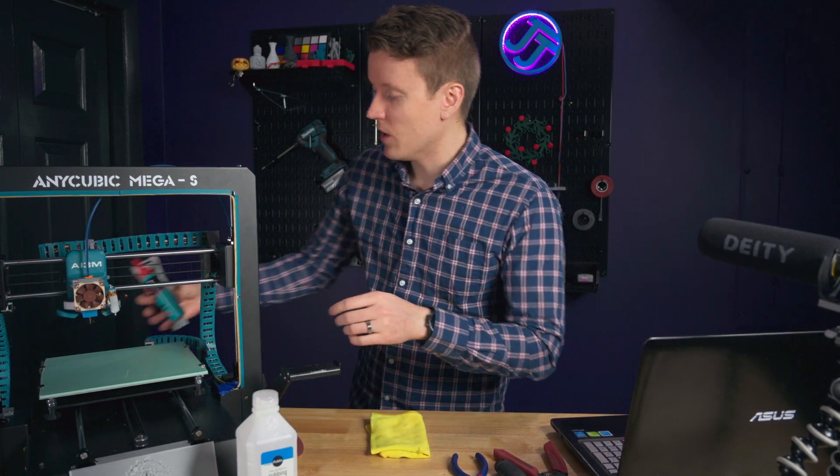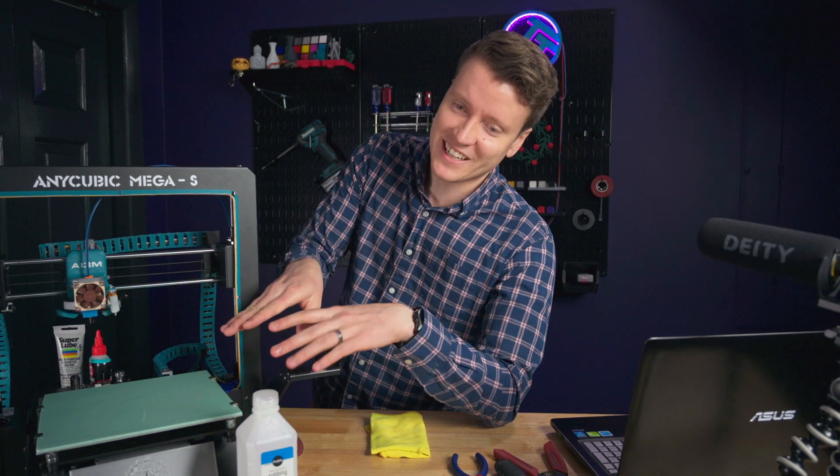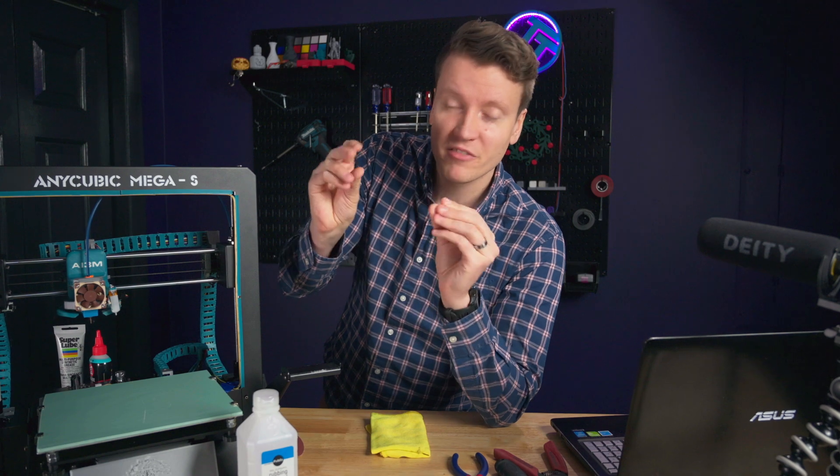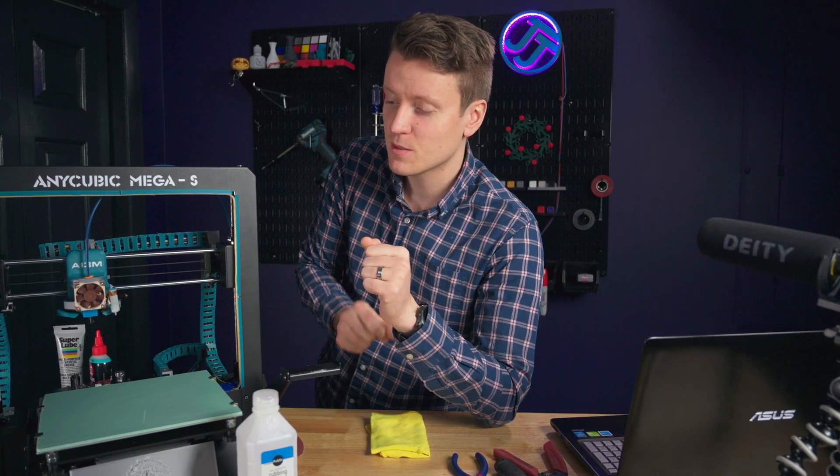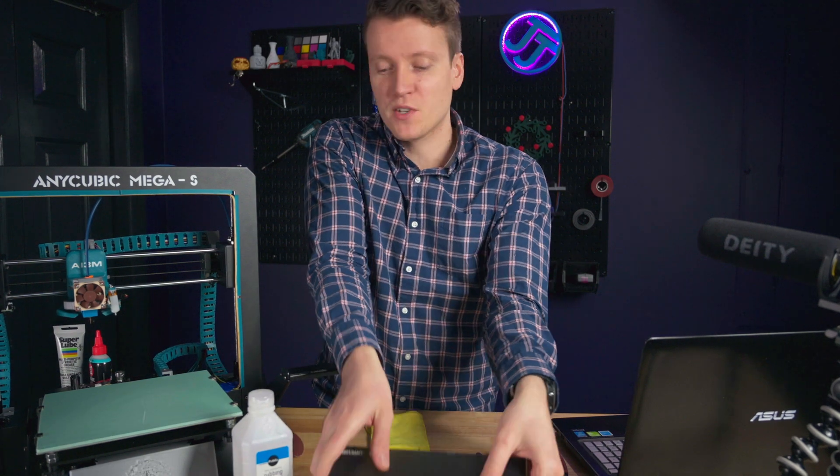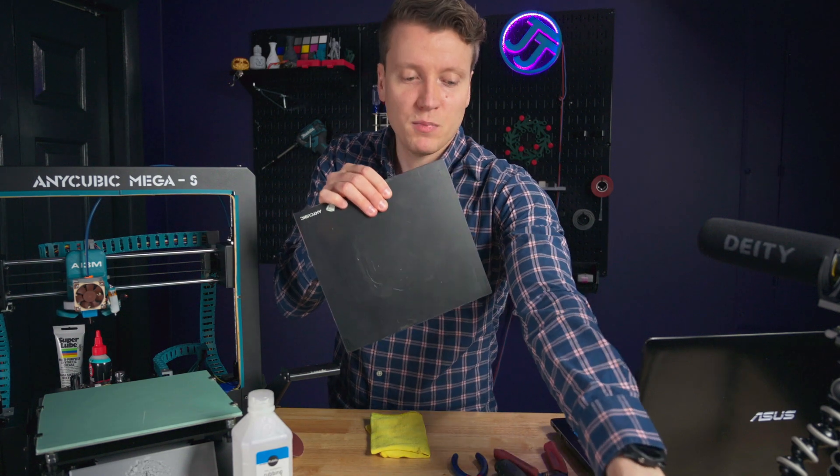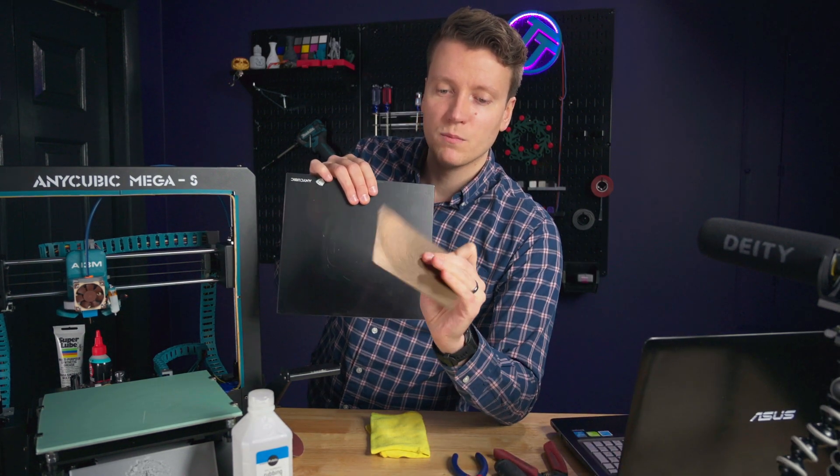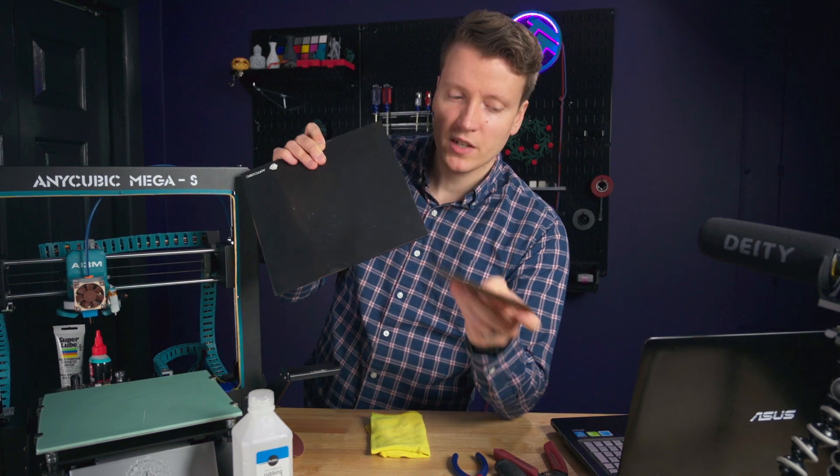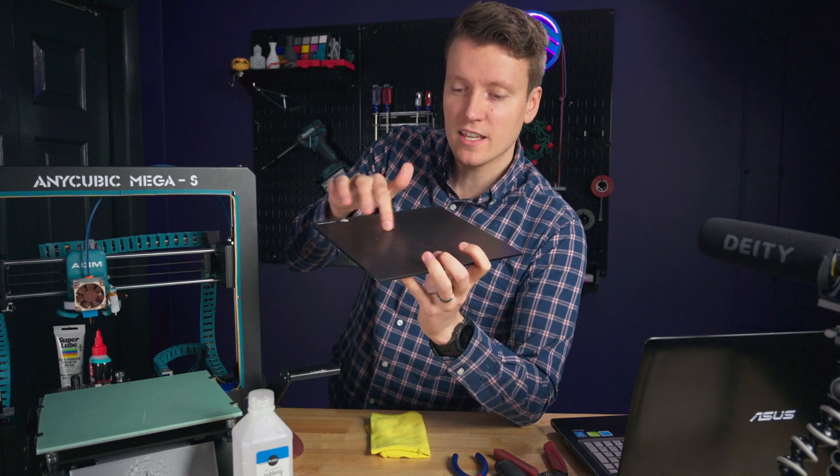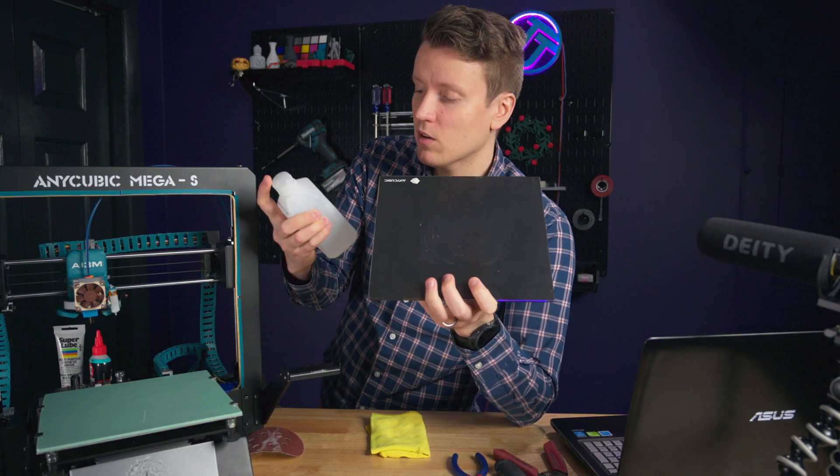So now we can move on to the print bed. It's a very different system. You do not want lubrication here. And your greasy, oily fingers will mess it up. So you want to keep it as clean as possible. I've got all three options here. We've got a G10, what I call the ultimate build surface. We've got a glass plate. And we've got a dual-sided PEI spring steel plate.